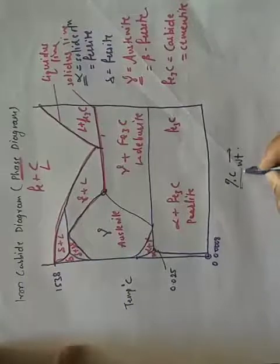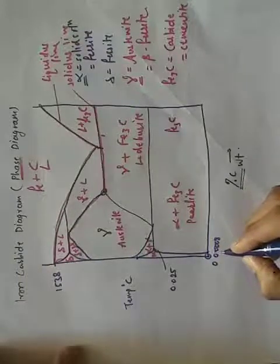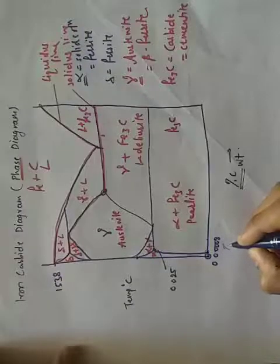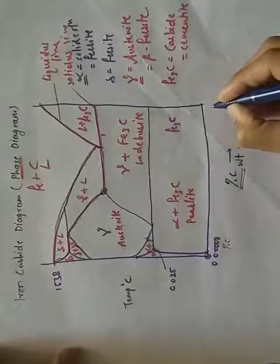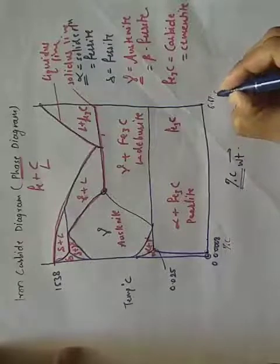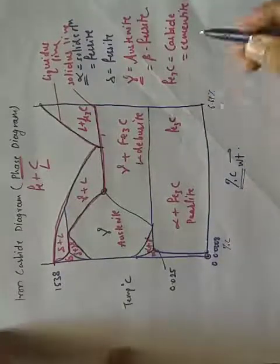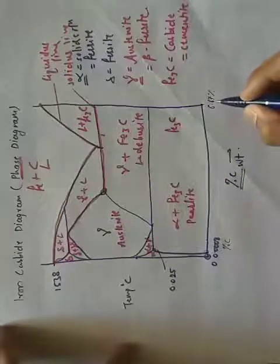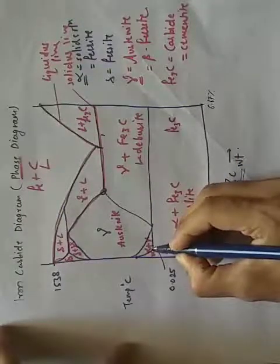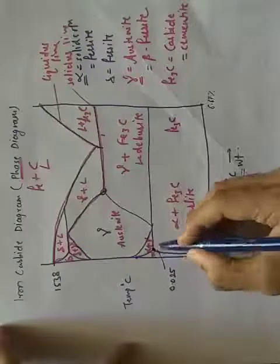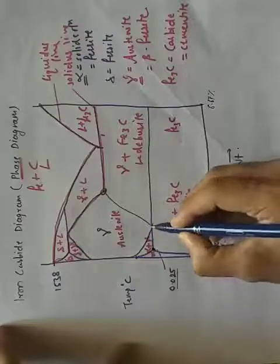Starting with the addition of carbon in iron: initially we have 0.0008% carbon, and the maximum addition is 6.67%. Beyond this we have a brittle crystal structure, so it is of no use. The maximum solubility of carbon in alpha is 0.025%.